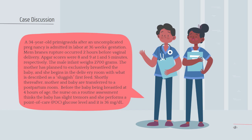The mother has planned to exclusively breastfeed the baby, and she begins in the delivery room with what is described as a sluggish first feed. Shortly thereafter, mother and baby are transferred to a postpartum room. Before the baby being breastfed at four hours of age, the nurse on a routine assessment thinks the baby has slight tremors and she performs a point of care POC glucose level, and it is 36 milligrams per deciliter.